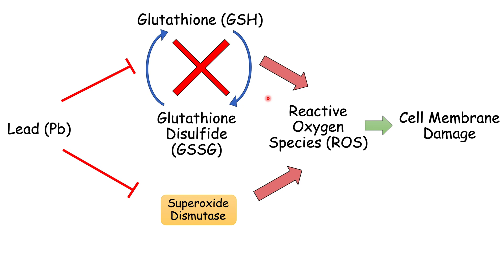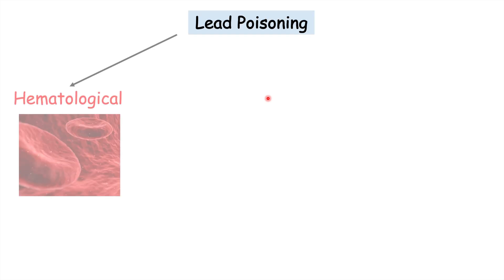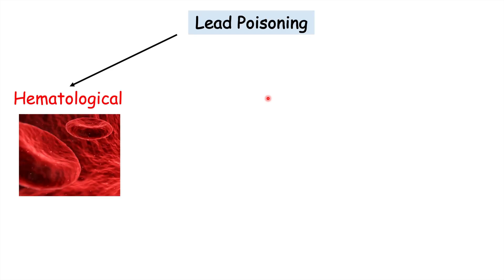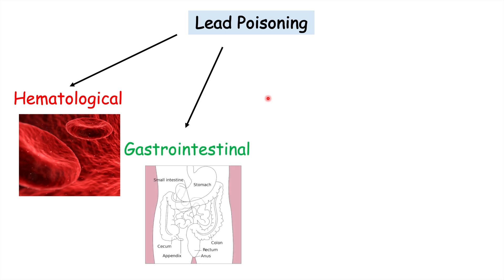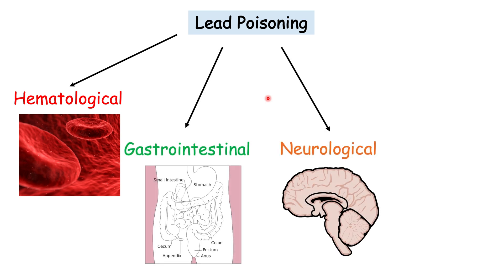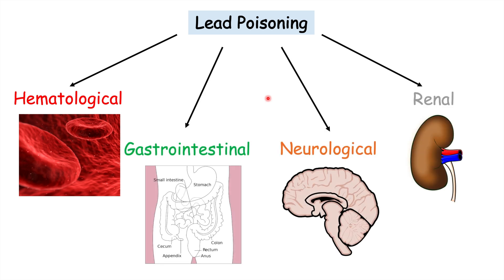All of these effects lead to a variety of signs and symptoms. Some of these include hematological findings, gastrointestinal findings, neurological findings, and renal findings — effects on the kidney. We're going to talk about all of these in the upcoming slides.